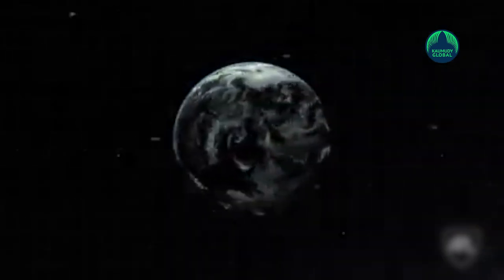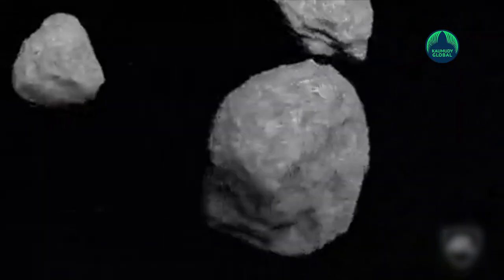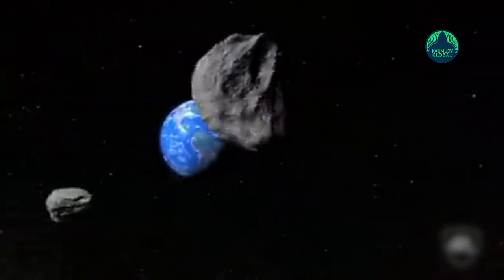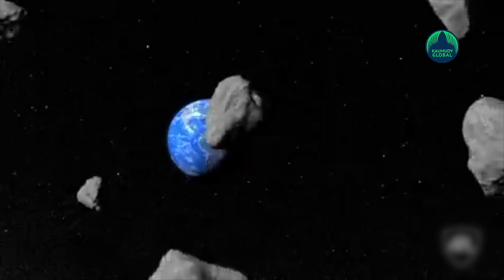Officially called 2022 EB-5, the asteroid was spotted on March 11th by astronomer Kristian Saransky using the Schmidt telescope at the Piskesteto mountain station in Hungary. Two hours later, the asteroid crashed down north of Iceland.